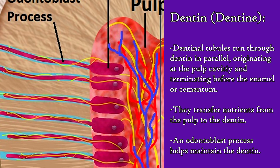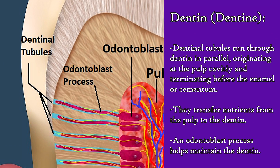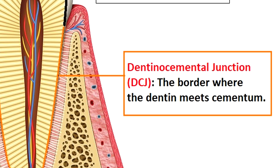These tubules transfer nutrients from the pulp to the dentin and contain an odontoblast process, which maintains the dentin. Because these tubules originate at the pulp of the tooth, which contains all the vessels and nerves, any damage to the enamel or gums can affect these tubules, which may result in tooth pain or sensitivity. The border where the dentin meets the enamel is called the dentino-enamel junction, or DEJ for short, and the border where the dentin meets the cementum is called the dentino-cemental junction, or DCJ for short.